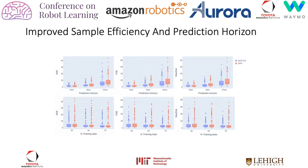We also evaluate in terms of prediction horizon and sample efficiency. We set the prediction horizon from 9 seconds to 12 seconds in 3-second intervals. Sample efficiency is evaluated by training with 30, 50, and 70% of the training data. In both cases, integrating rules results in performance improvements, especially in the long prediction horizon and low data cases.